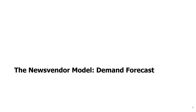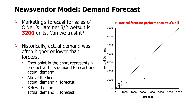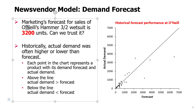The news vendor model — demand forecast. Marketing is forecasting that the demand for O'Neill's Hummer wetsuit will be 3,200 units. Should we trust it?